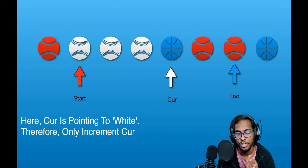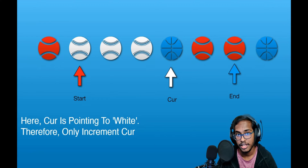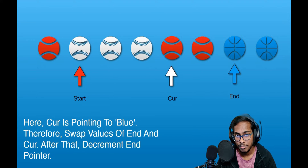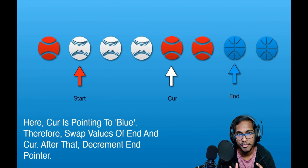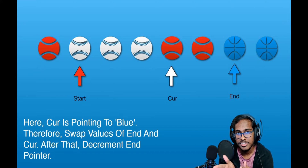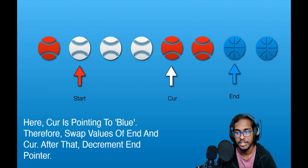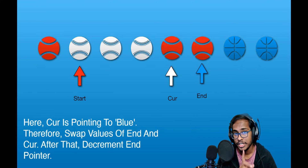Now cut is pointing to a blue ball. We swap the balls at cut and end. The blue and red balls are interchanged. Then we decrement end and do not increment cut. You can clearly see why — if we had incremented cut, it would now point to the next red ball, and that red ball would end up in the center of the array, which is not what we want. That is why we only decrement end and do not increment cut.